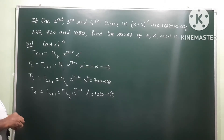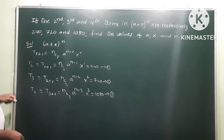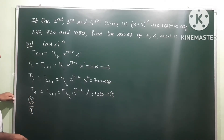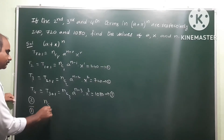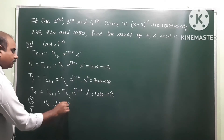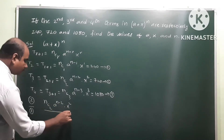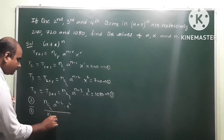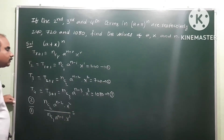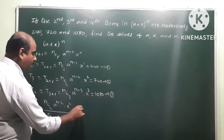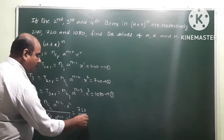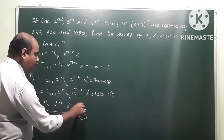Dividing equation 2 by equation 1: left side is nC2 · a^(n−2) · x^2 divided by nC1 · a^(n−1) · x^1. Right side is 720 divided by 240, which equals 3.